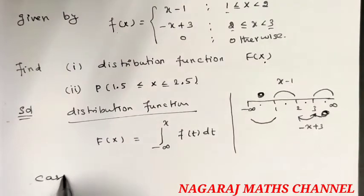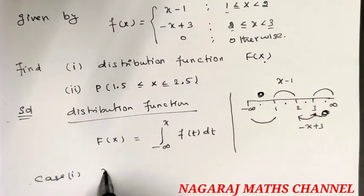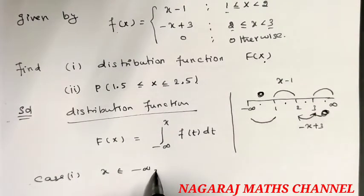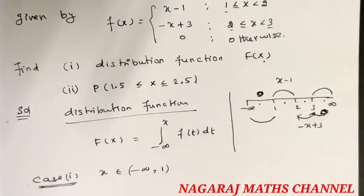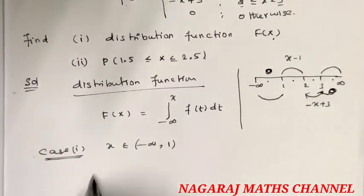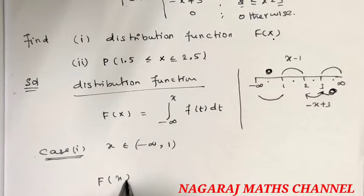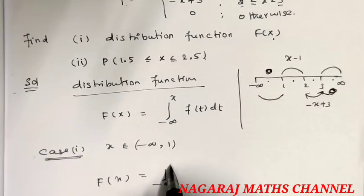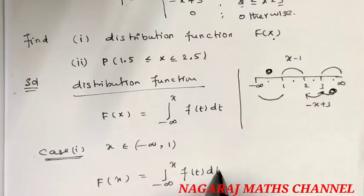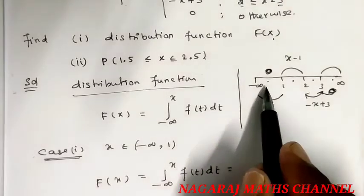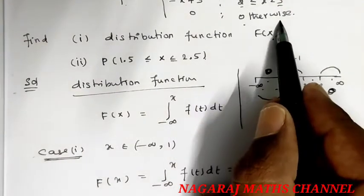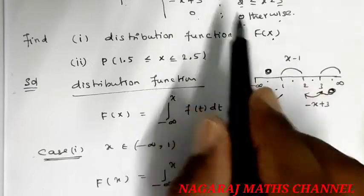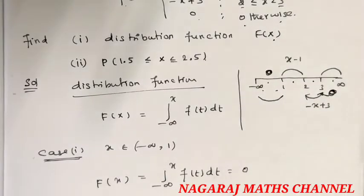Case 1: if x belongs to minus infinity to 1. So F(x) = integral from minus infinity to x of f(t) dt. Since x is less than 1, this falls into the otherwise category, so F(x) = 0.